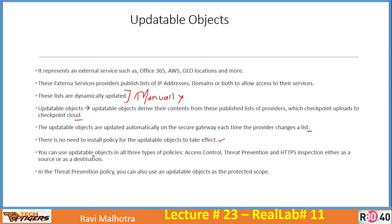You can use updatable objects in all three types of policies: access control, threat prevention, and HTTPS inspection. In the threat prevention policy, you can also use updatable objects as the protected scope. You can use updatable objects either as a source or as a destination in any security policy.